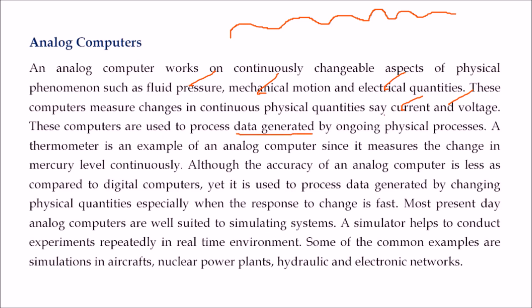They are used to process data generated by ongoing physical processes. For example, take a thermometer — it measures the changes in the mercury level. Although the accuracy of analog computers is less than digital, when we are dealing with physical quantities which are continuously changing, we need an analog computer.